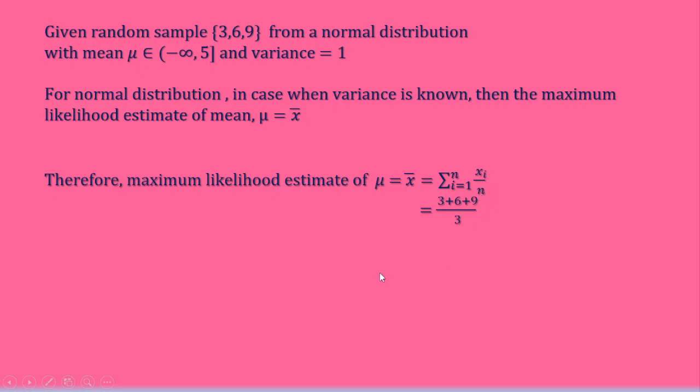So we can add this: 3 plus 6 plus 9 which is 18 we get. And n is 3 as here it is given a random sample with size 3. So here we get 18 by 3 which is equal to 6. But here given that mean μ belongs to (-∞, 5], it is a closed interval.